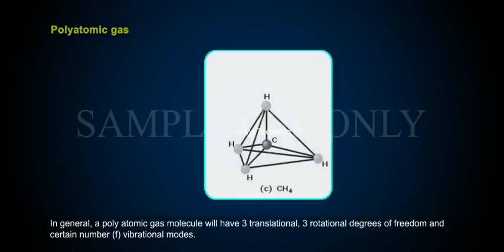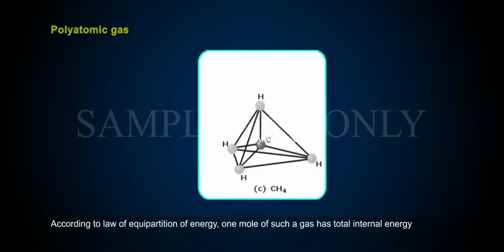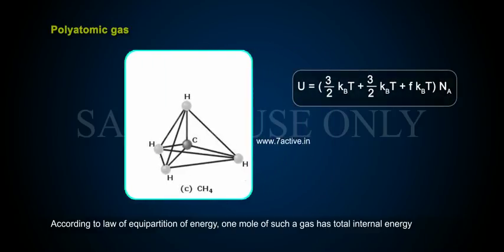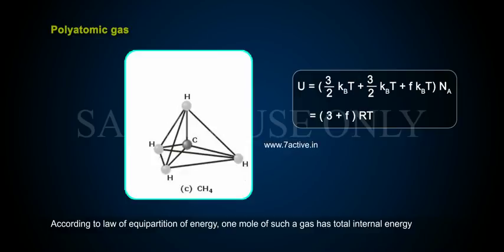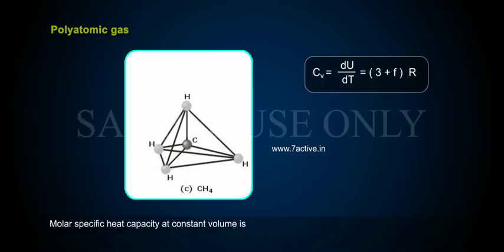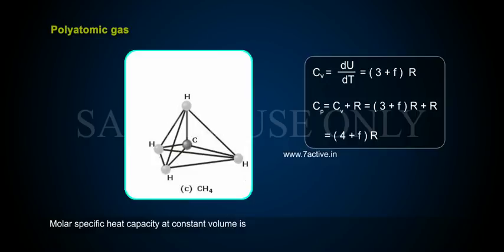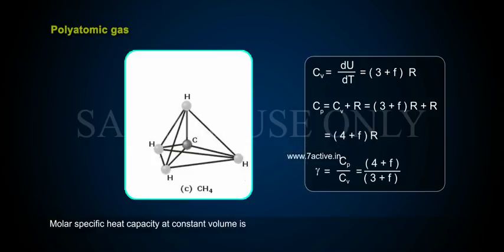Polyatomic gas. In general, a polyatomic gas molecule will have 3 translational, 3 rotational degrees of freedom, and a certain number F of vibrational modes. According to the law of equipartition of energy, 1 mole of such a gas has total internal energy U = 3/2 k_B T + 3/2 k_B T + F k_B T × N_A = (3 + F) RT. Molar specific heat at constant volume is Cv = (3 + F)R, Cp = (4 + F)R, and γ = (4 + F)/(3 + F).